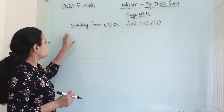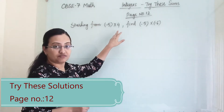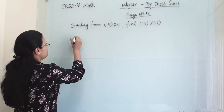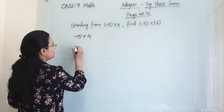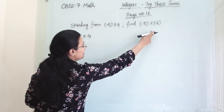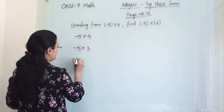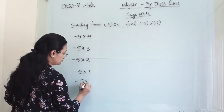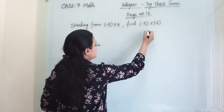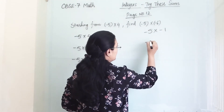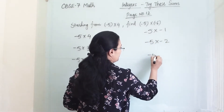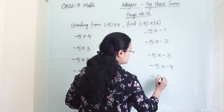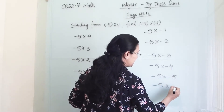The question is: starting from (-5) × 4, find (-5) × (-6). That means from (-5) × 4 we have to count till (-5) × (-6). So the sequence is: (-5) × 3, (-5) × 2, (-5) × 1, (-5) × 0. Then we move towards negative integers: (-5) × (-1), (-5) × (-2), (-5) × (-3), (-5) × (-4), (-5) × (-5), and the last one (-5) × (-6).